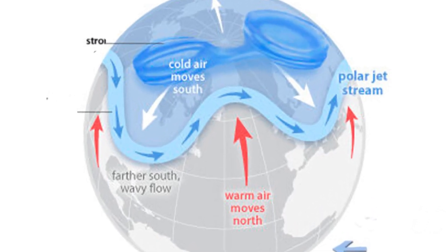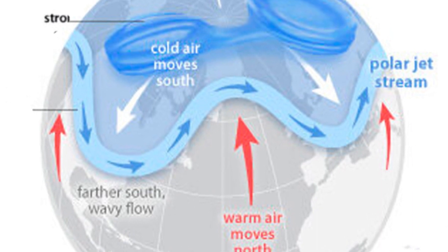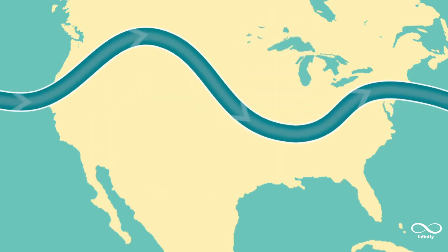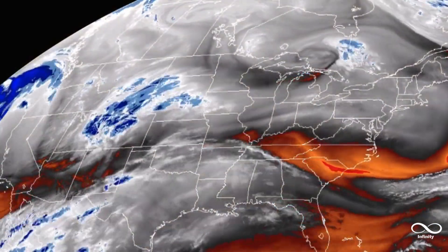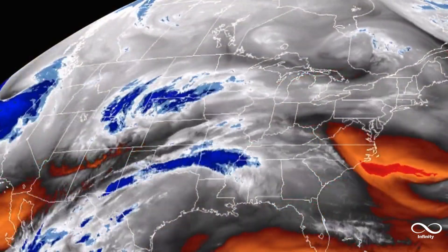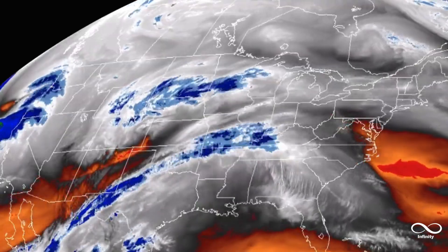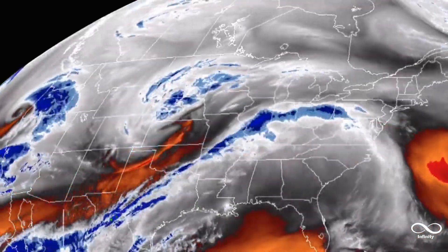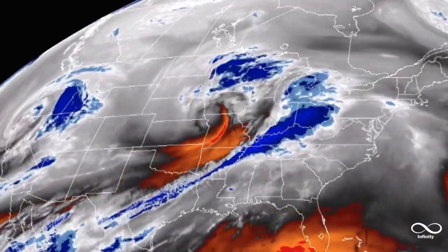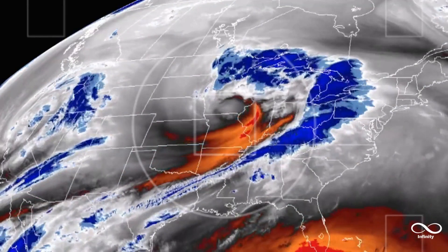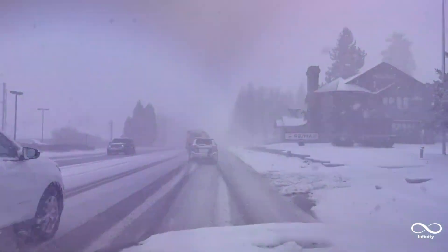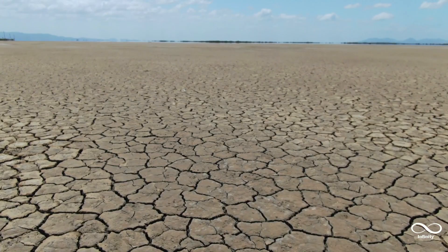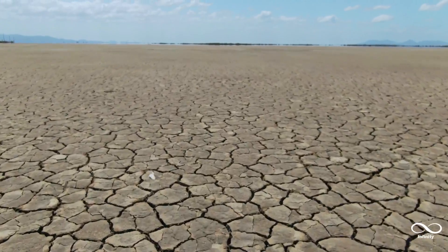However, when the polar vortices weaken or become disrupted, the jet stream can become more wavy and erratic. This can allow cold air from the polar vortex to move southward while simultaneously enabling warmer air to move northward. This exchange of air masses can lead to extreme weather events, such as cold waves or heat waves, snowstorms or droughts, depending on the region and time of year.